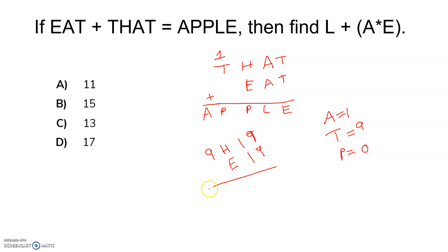Now here A is basically one, P is basically zero. Here also zero. L we don't know till now and E also we don't know till now.